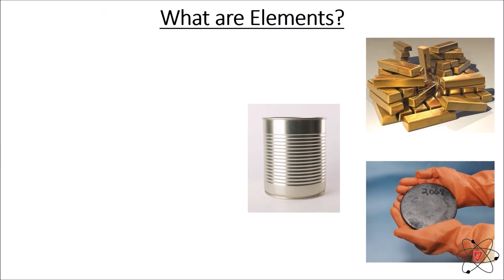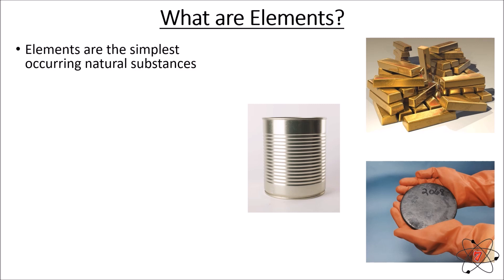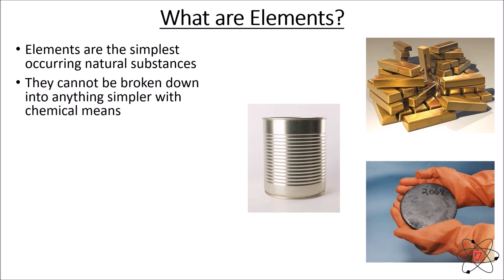In very basic terms, elements are the simplest naturally occurring substances and they cannot be broken down into anything simpler by chemical means. This basically means that if you have an element and you react it, you cannot make anything simpler. It is possible to break down elements using non-chemical methods to give you protons, neutrons and electrons, but we'll look at that a little bit later on.